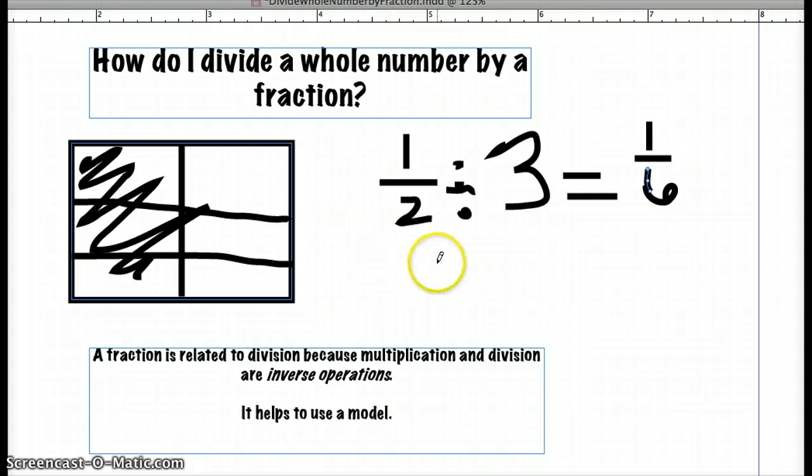Now a trick that I said that we would learn is really, really easy. But it helps to show the model first so we understand what's happening when we divide fractions. The trick is we keep the first number, here it's a fraction one-half, as is. But then we flip the second number and we multiply. So we're going to flip three and make it one-third.